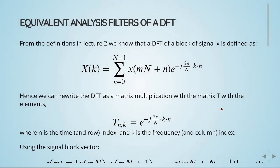From the definitions of previous lectures, we know that the DFT of a block signal X is defined as this sum here. Therefore, we can rewrite the DFT as a matrix multiplication with the matrix T, with elements given by e^(-j·2π/N·k·n), where n is the time and row index and k is the frequency and column index.